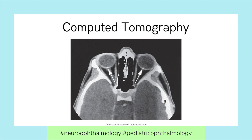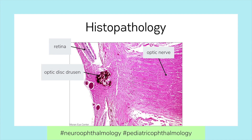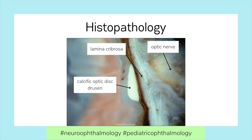Calcifications at the optic nerve head may be seen on CT, indicative of calcific drusen. Histologically, Optic Disc Drusen appear as basophilic calcified acellular deposits containing mucopolysaccharides, amino acids, DNA, RNA, and iron. They are typically located anterior to the lamina cribrosa and posterior to Bruch's membrane in the lamina choroidalis portion of the intraocular optic nerve.